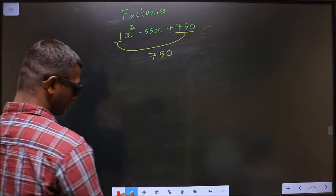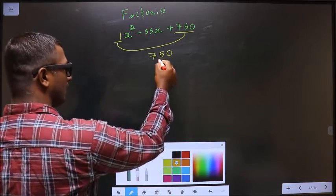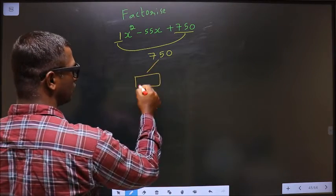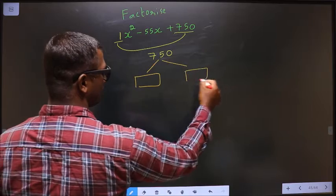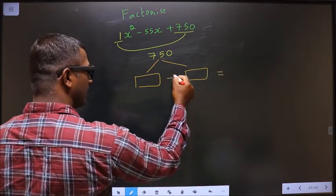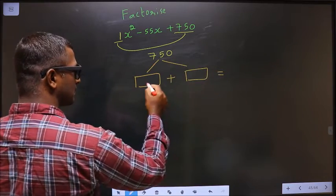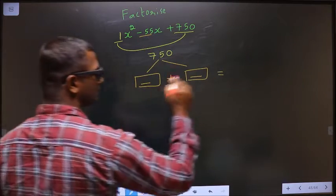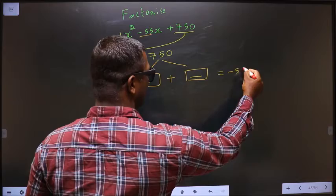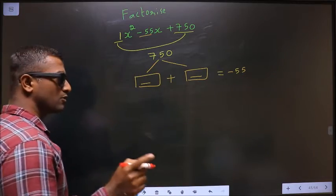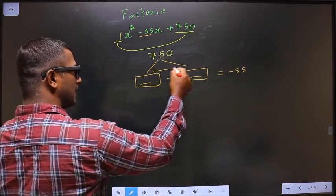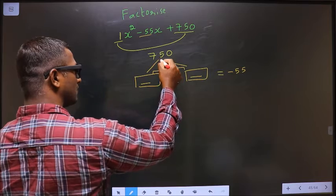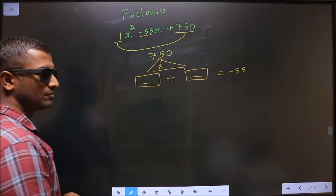Next. Now you should look out for two numbers such that when you add these two numbers, you should get this x coefficient, that is -55. And also, when you multiply these two, you should get 750.